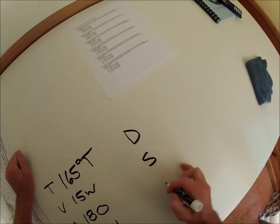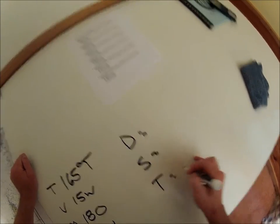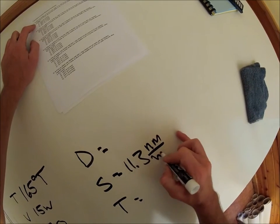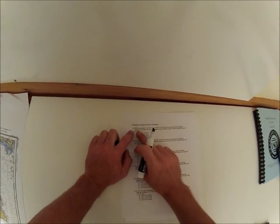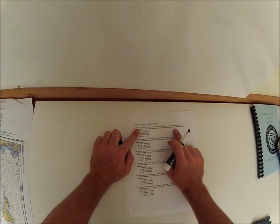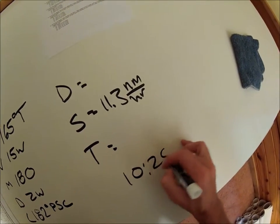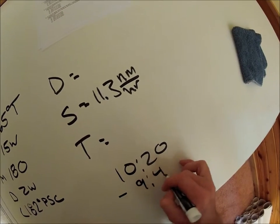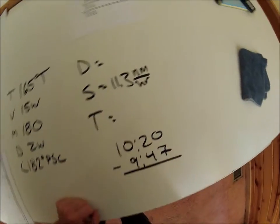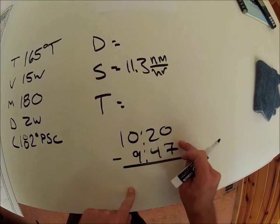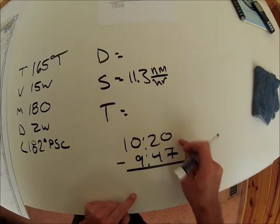Distance, speed, time. It says our speed was 11.3 knots, nautical miles per hour. Then it gives us two times so we can find a time, right? 947 and 1020, so 1020 minus 947. I'm going to do a bit of this in my head: 13 gets to 10 plus 20 is 33 minutes.